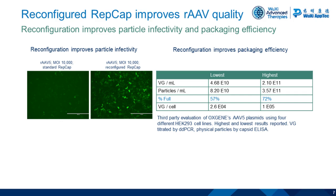We're getting up to 2×10^11 genome containing units produced per mL, which equates to 1×10^5 units per cell. This 10^5 per cell productivity is what we're aiming for across all of our serotypes. Notably, this company also managed to replicate figures we've seen in-house at Oxygen, showing that 57 to 72 percent of the particles they produced did actually contain the genome of interest. This is important because if your upstream fraction contains 50 to 70 percent full particles, when you do downstream processing and enrich for full particles, you'll have a lot more material left over at the end — significantly higher than standard REPCAP plasmids allow.